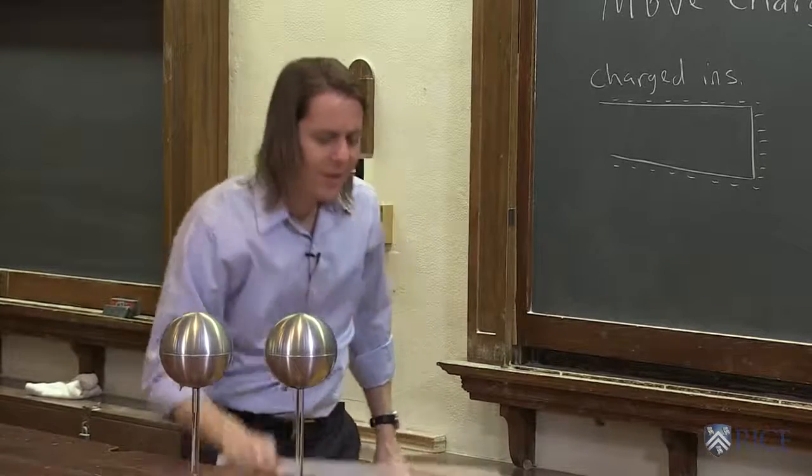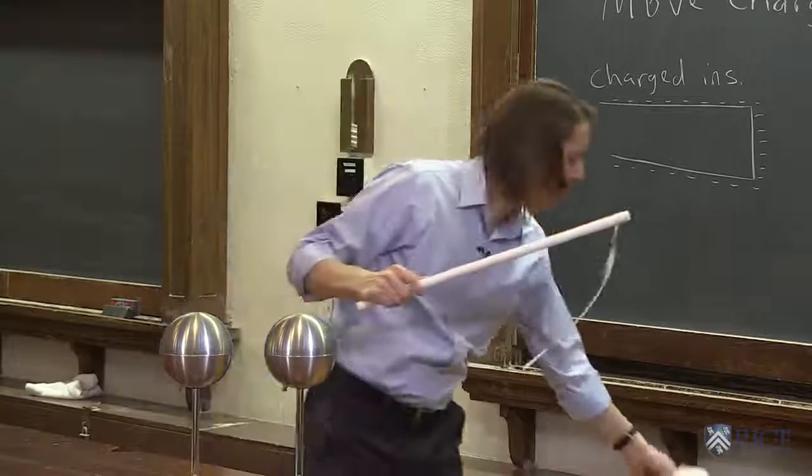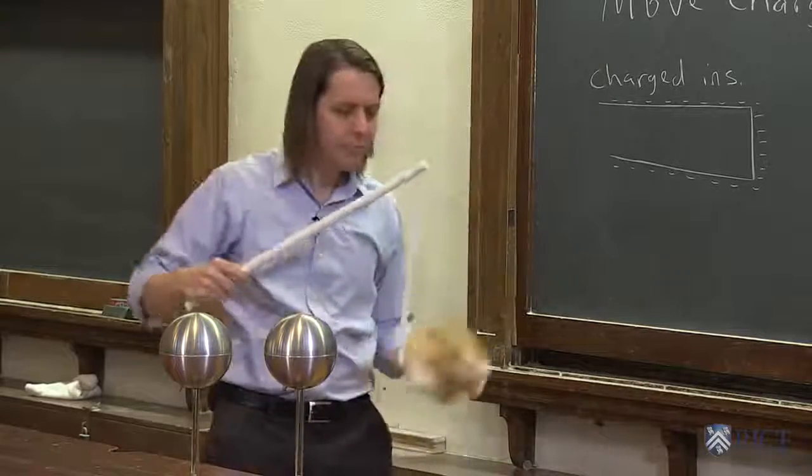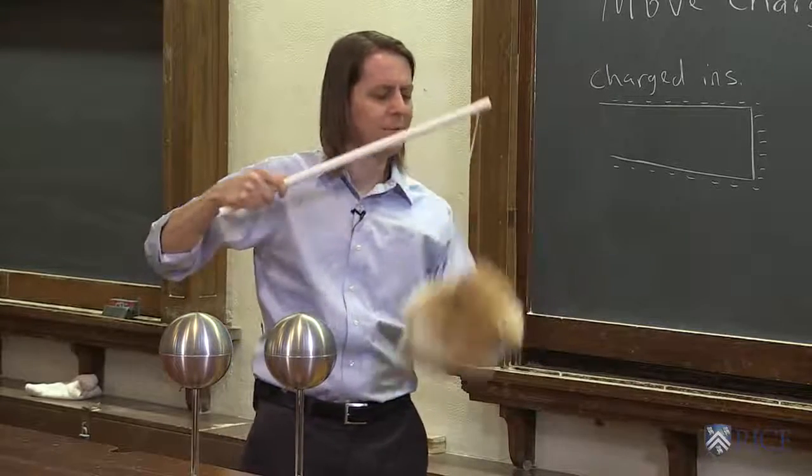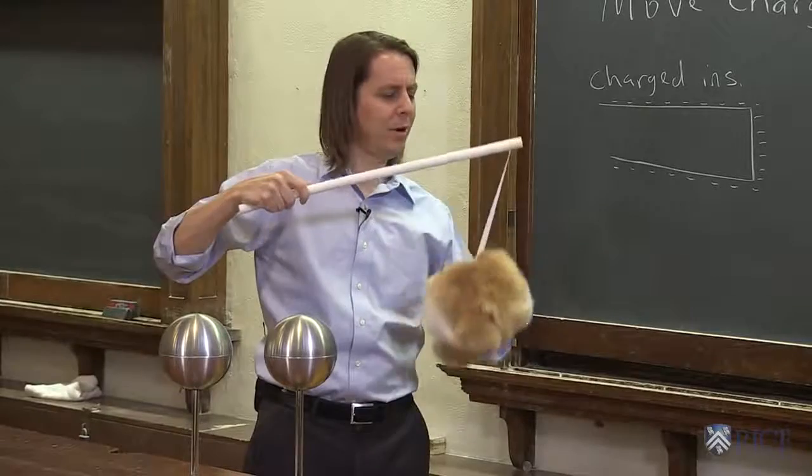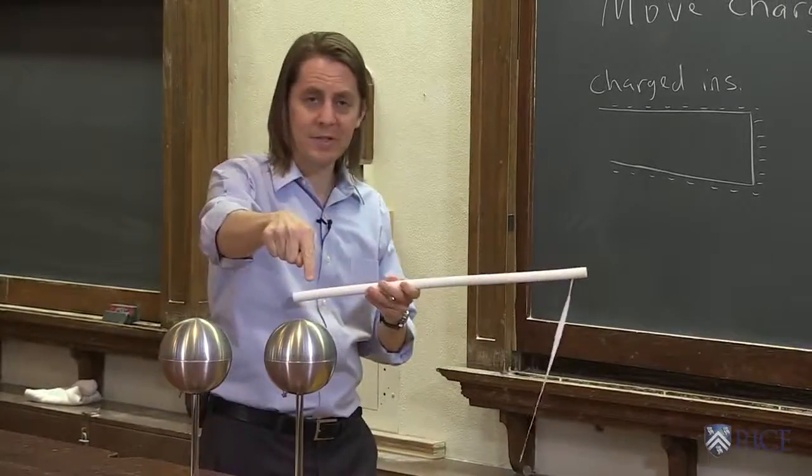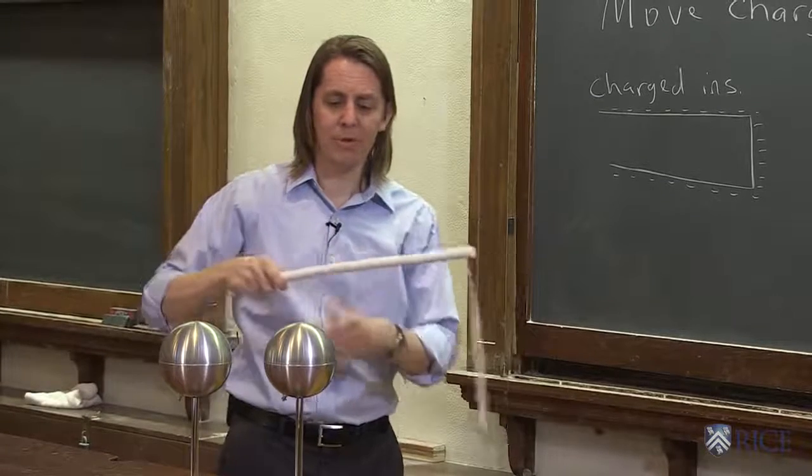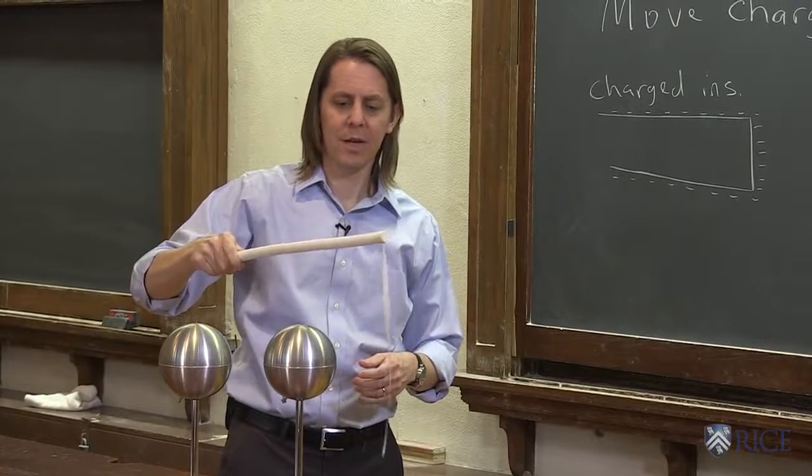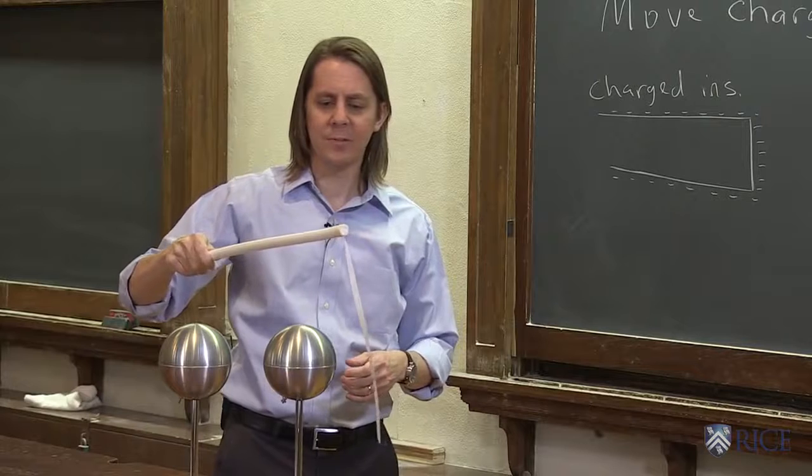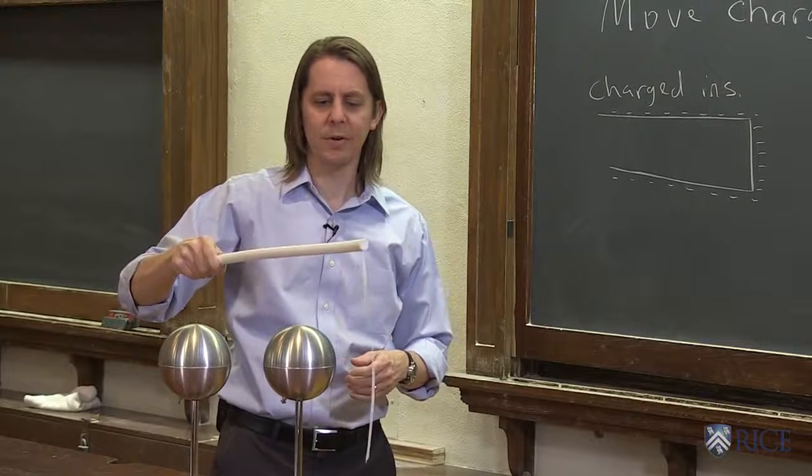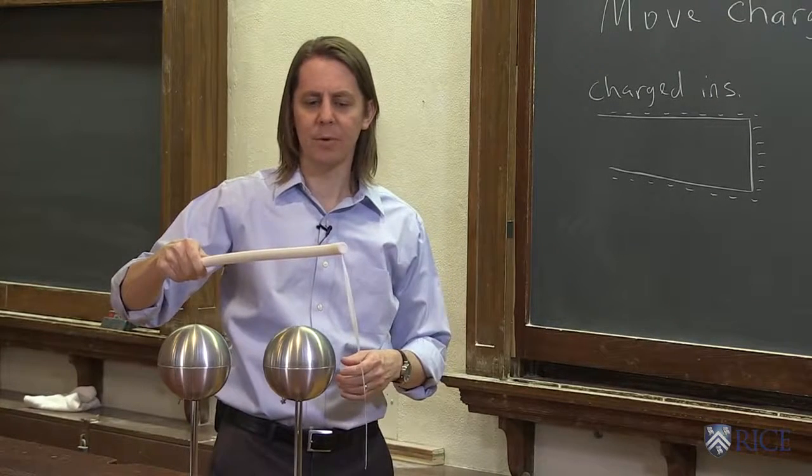To check that, I have my little charge sensor here. So this is a piece of Teflon tape hanging from a rod. And I'll charge up the Teflon tape. The Teflon tape is negative. And this one is negative. So they should repel. Let's see if we have repel. See, the tape doesn't want to touch that sphere. It's kind of staying away from it.